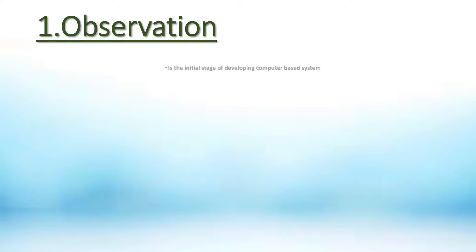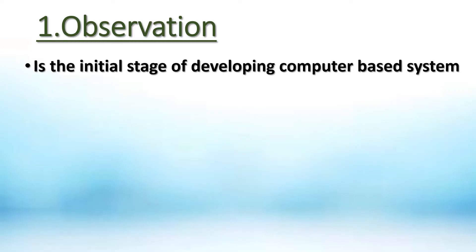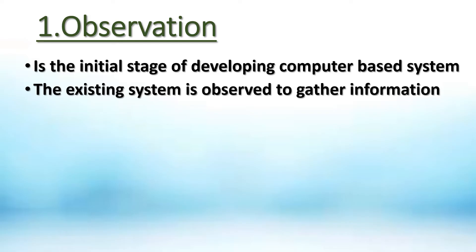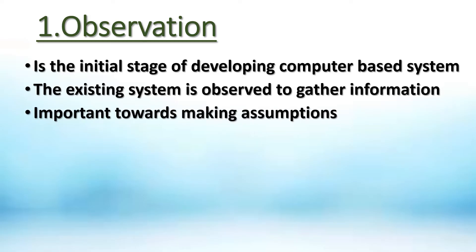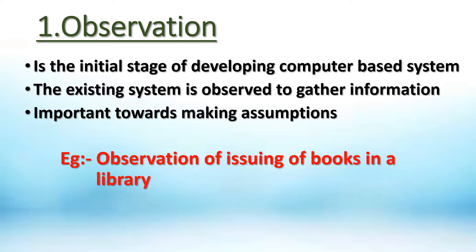Observation is the initial stage of developing a computer-based system. The existing system is observed to gather information, which is important towards making assumptions. For example, observation of the issuing of books in a library.